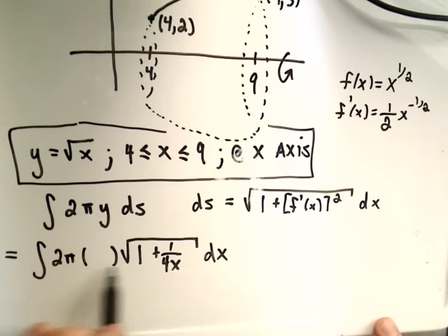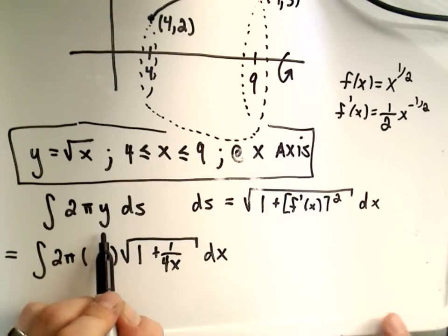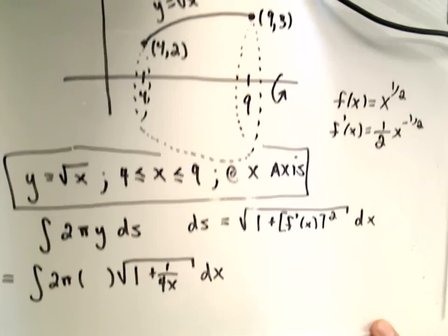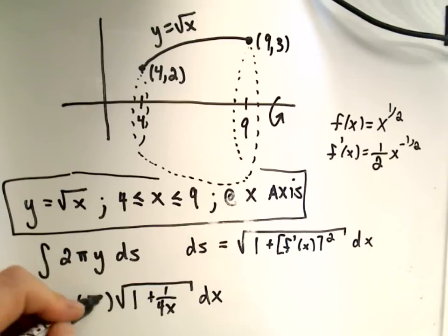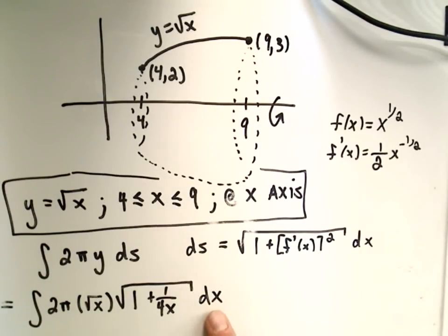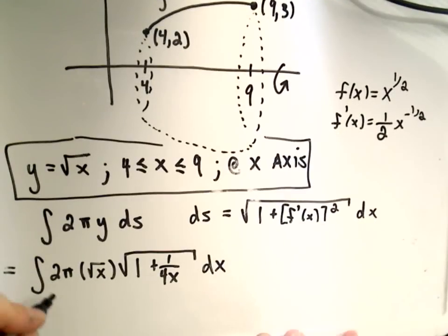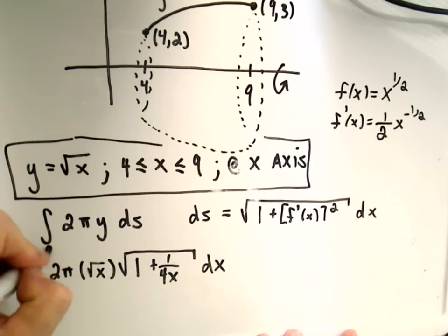Okay, that means everything inside of my formula needs to be in terms of x. So normally there's a 2πy here. But again, y we know in terms of x is just square root of x. So that's what will go inside of there. And since I'm using the dx version, my limits of integration will come from the x-axis. So we have to use from 4 to 9.